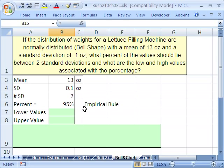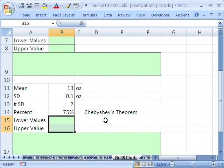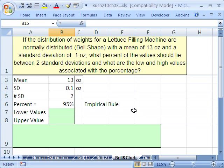Hey, we want to talk about the empirical rule and this great Russian mathematician's theorem on the same values and compare what kind of statements we can make. Here's our example: if the distribution of weights for a lettuce filling machine are normally distributed or bell-shaped with a mean of 13 ounces and a standard deviation of 0.1 ounce, what percent of values should lie between two standard deviations? And what are the low and high values associated with these percentages?